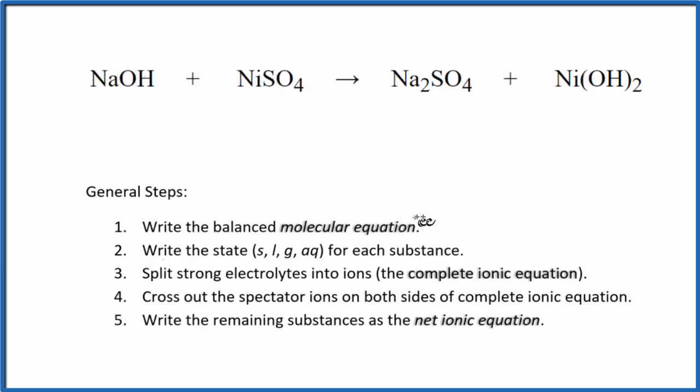First thing we need to do is balance our molecular equation. I can see that I have two hydroxides here and just one here, so I'm going to put a two in front of the NaOH. Now I have two sodium atoms and two here. That's good. And the nickel, one, one, and one sulfate and another sulfate. So this is balanced. This is our balanced molecular equation.